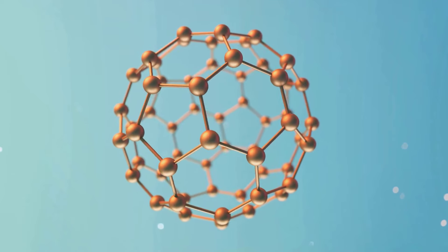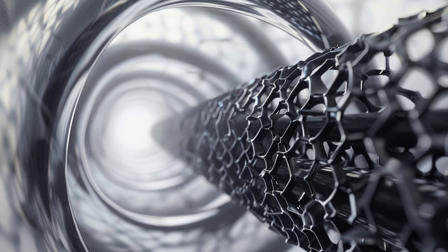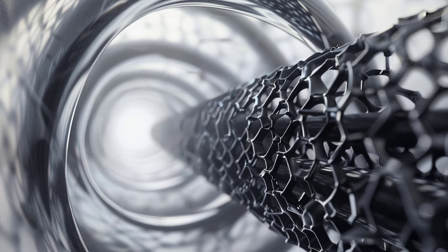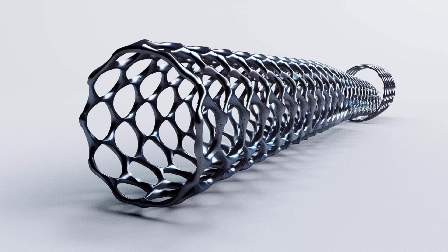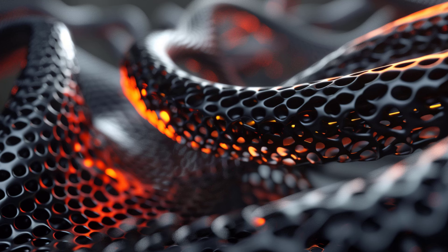Lastly, we have fullerenes, named after the architect Buckminster Fuller because their structure resembles his geodesic domes. Fullerenes were discovered in 1985, and the most famous fullerene, Buckminster Fullerene, or buckyballs, consists of 60 carbon atoms arranged in a soccer ball-like structure.